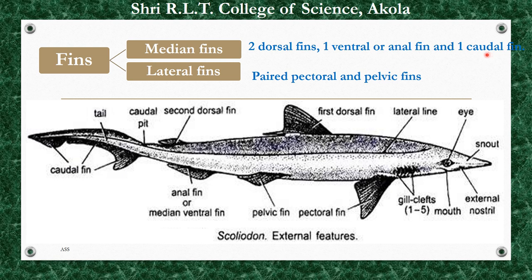The anterior or first dorsal fin is triangular, larger, and present at about the middle of the body. The second dorsal fin is also triangular in shape but much smaller than the first dorsal fin. It lies between the first dorsal fin and the tip of the tail.